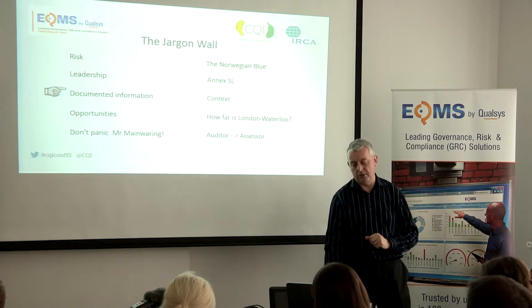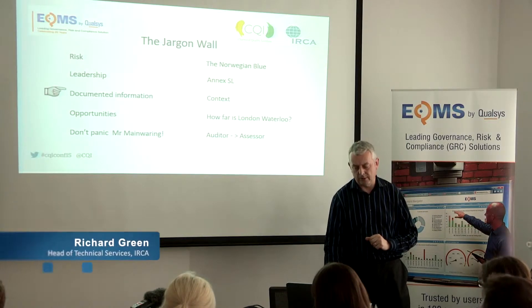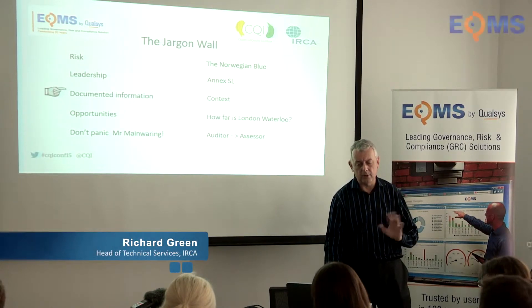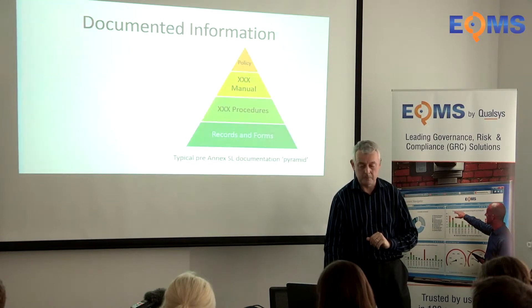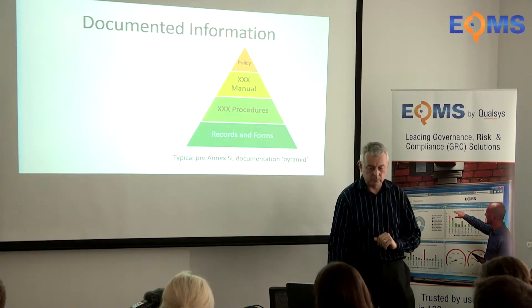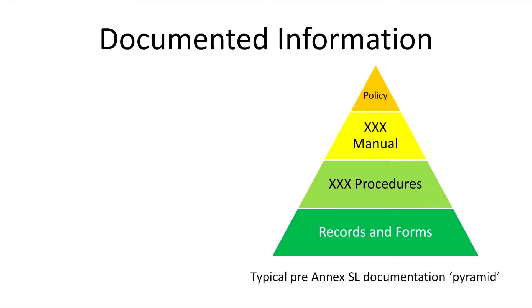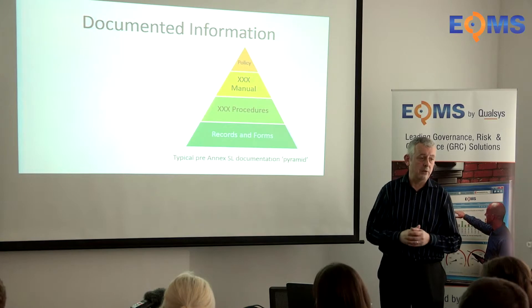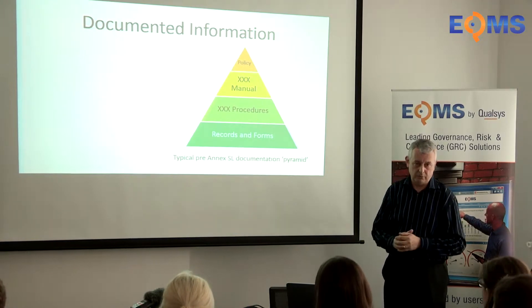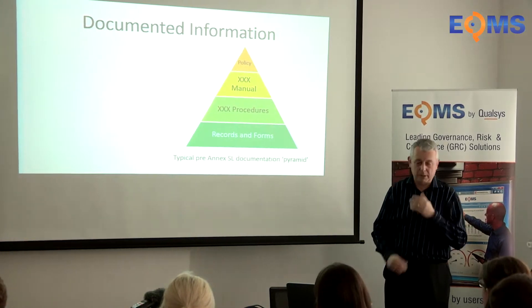Documented information — this is an interesting one. It sometimes gets people a little bit worked up, but it's not as bad as it initially sounds. If you're currently running a management system, you probably recognise this type of structure in terms of documentation. Sat at the top you've got policy, underneath that you've got manual, underneath that you have procedures, and then you've got a lot of records and forms. Does that look pretty familiar?